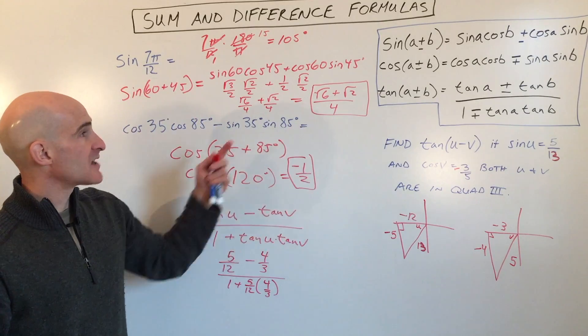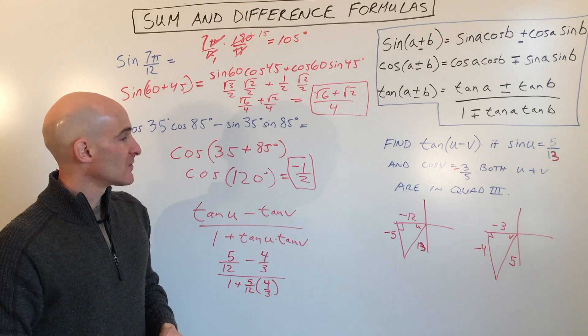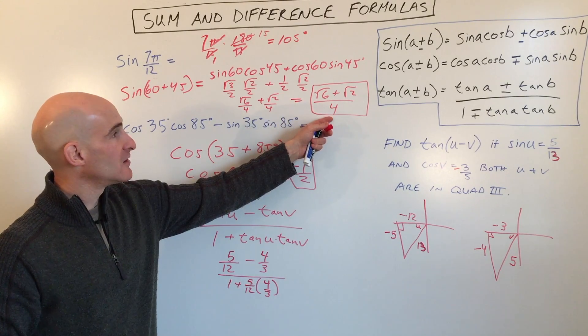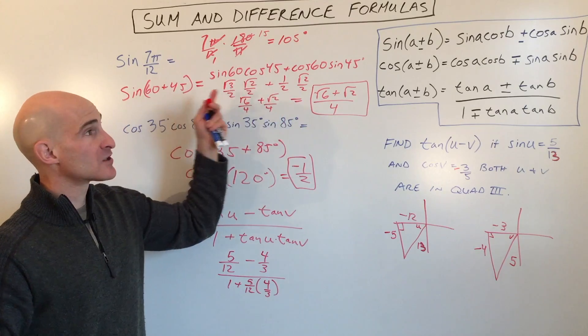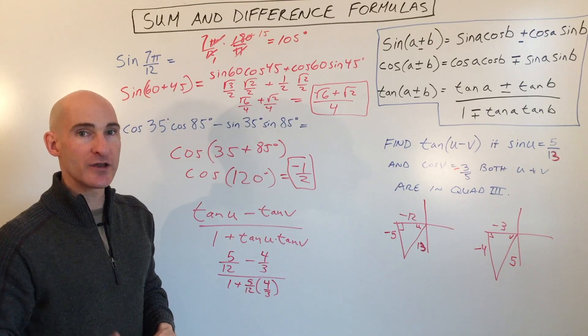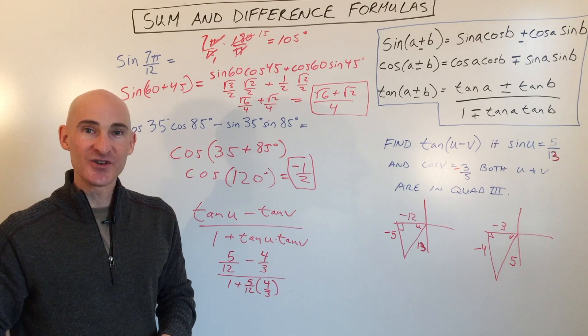And so these are some examples for how do you work with the sum and difference formulas with trigonometric functions. And it's a way of getting exact values when you don't necessarily know those values on the unit circle, the ones we studied, the multiples of 30, 45, 60, 90, like that. So I'll see you in the next video.